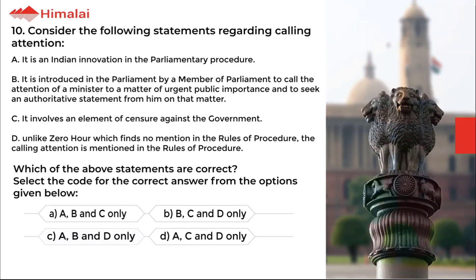Question number 10. Consider the following statements regarding Calling Attention: a. It is an Indian innovation in parliamentary procedure. b. It is introduced in Parliament by a member to call the attention of a Minister to a matter of urgent public importance and to seek an authoritative statement from him on that matter. c. It involves an element of censure against the government. d. Unlike Zero Hour which finds no mention in the Rules of Procedure, the Calling Attention is mentioned in the Rules of Procedure. Which of the above statements are correct? The correct option is C.